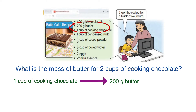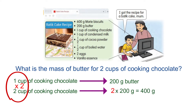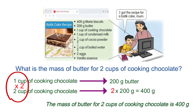The cup of cooking chocolate is increasing from one to two. From one cup of cooking chocolate to get two cups of cooking chocolate, we need to multiply by two. So one cup of cooking chocolate multiplied by two gives two cups of cooking chocolate. Same goes for butter — 200 grams of butter multiplied by two means Anissa needs to use 400 grams of butter. So the mass of butter for two cups of cooking chocolate is 400 grams.